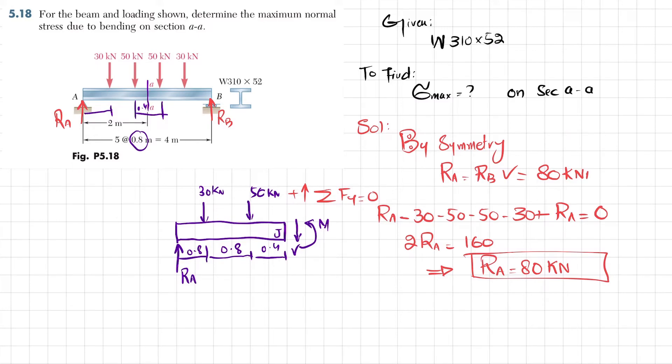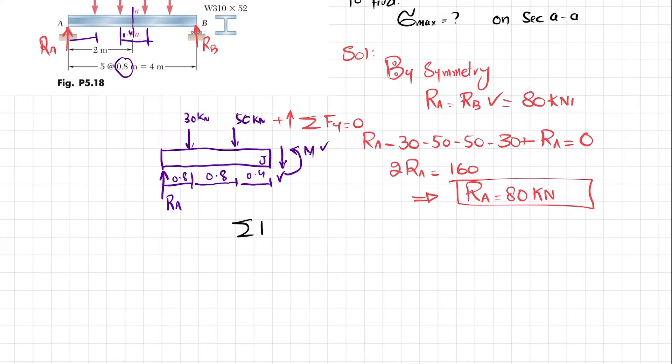Now we will apply equilibrium condition in order to find this reaction moment M. We will write that the sum of all moments about point J equals zero, taking counterclockwise moment as positive. At J, you know that this moment is counterclockwise, so M plus due to this load, 50 kilonewtons, perpendicular distance is 1.6. This will be 1.6. Sorry, at point J we are taking the moment at point J, not at 6. So 50 into perpendicular distance is 0.4.